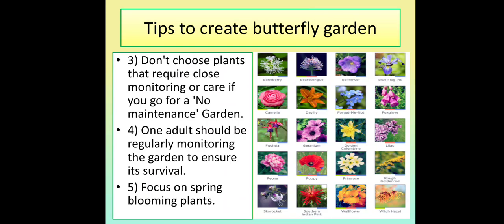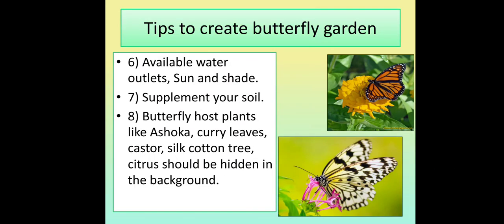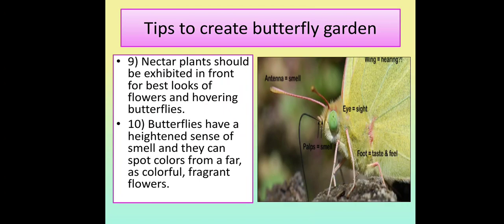Focus on spring blooming plants. Ensure available water outlets, sun and shade. Supplement your soil. Butterfly host plants like ashoka, curry leaves, castor, silk cotton tree, and citrus should be placed in the background. Nectar plants should be exhibited in front for the best display of flowers and hovering butterflies. Butterflies have a heightened sense of smell and can spot colors from afar, so choose colorful fragrant flowers.